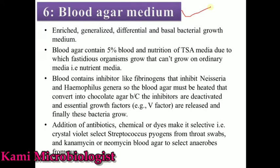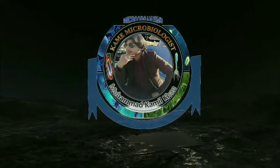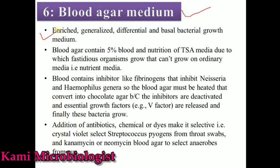So what is blood agar medium? This blood agar medium is a type of culture media, but it is an enriched media because this media contains the nutrients present in the tryptic soy agar media — tryptone and yeast extract. That's why we can say it is enriched media. Moreover, it is a generalized media because every type of bacteria can grow in it, including fastidious and non-fastidious bacteria. This media is also a differential media because through it we can differentiate hemolytic bacteria — some are beta-hemolytic, some alpha, and some gamma.